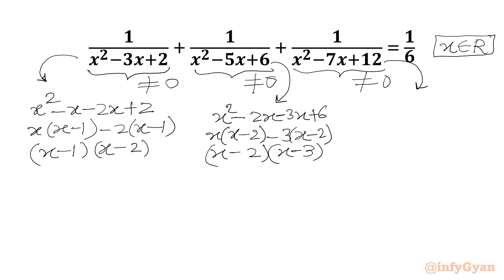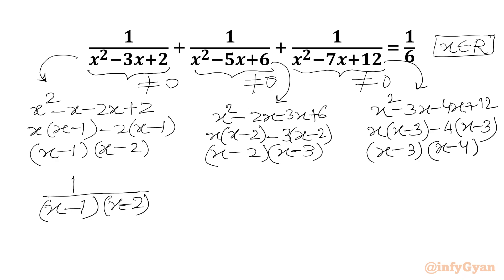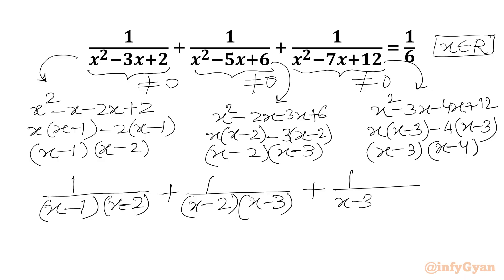For our third denominator, we split -7x as -3x - 4x, then plus 12. Taking x common from the first two terms gives x(x-3), and taking -4 common gives -4(x-3). So we can write (x-3)(x-4). Our equation becomes: 1/[(x-1)(x-2)] + 1/[(x-2)(x-3)] + 1/[(x-3)(x-4)] = 1/6.